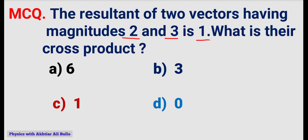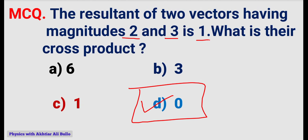So the correct option is D. The resultant of two vectors having magnitudes 2 and 3 being 1 means their cross product will be 0.